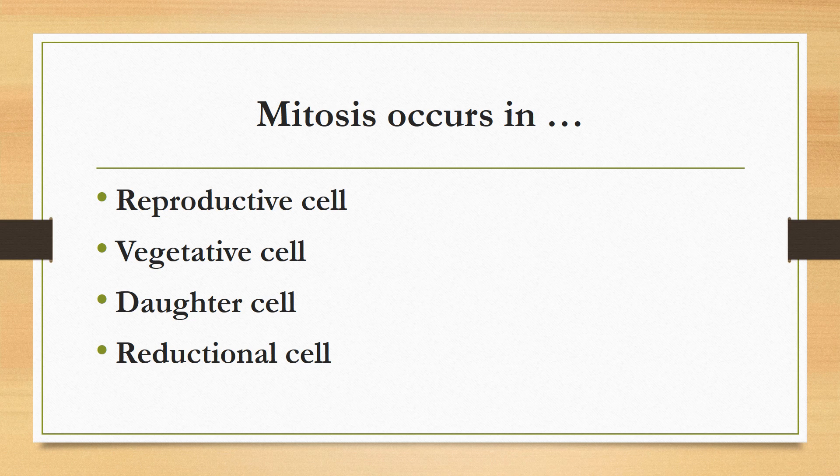Mitosis occurs in: reproductive cell, vegetative cell, daughter cell, or reductional cell? The correct answer is vegetative cell. Mitosis occurs in vegetative or somatic cells. Meiosis occurs in reproductive cells. Mitosis also occurs in protozoa, bacteria, and yeast.